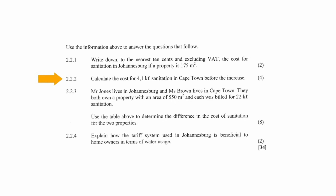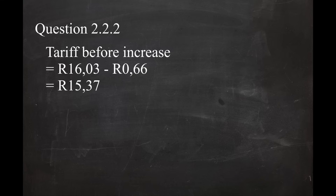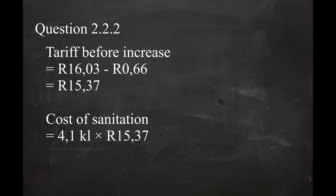In question 2.2.2, you are instructed to calculate the cost of 4.1 kilolitres of sanitation in Cape Town before the increase. According to Table 3, the tariffs after the increase are given, along with how much each tariff increased. In step 1, there is an increase of 66 cents, so the tariff before the increase was R16.03 per kilolitre minus R0.66 per kilolitre, which equals R15.37 per kilolitre. So the cost of 4.1 kilolitres is 4.1 multiplied by R15.37, which equals R63.02.